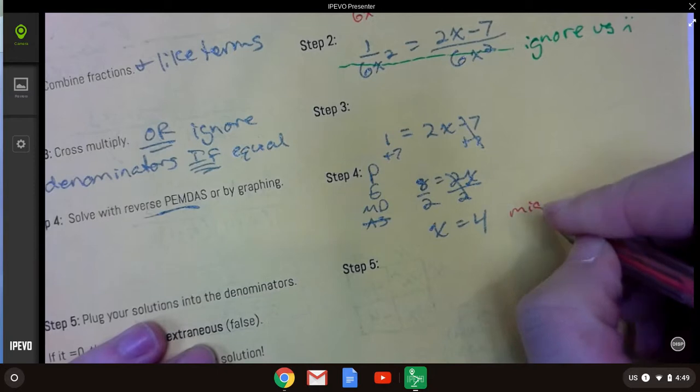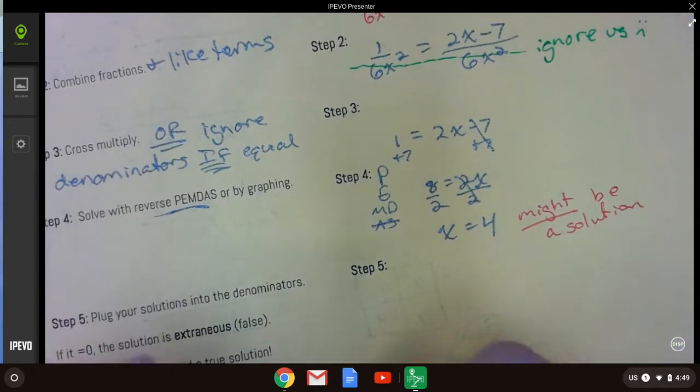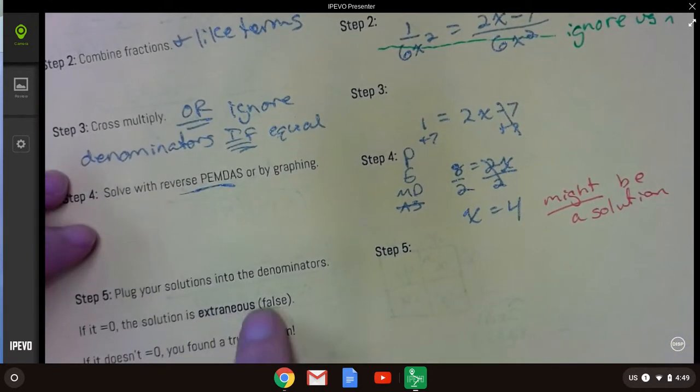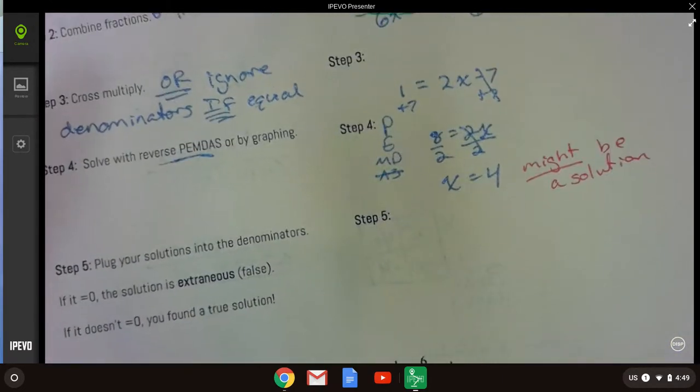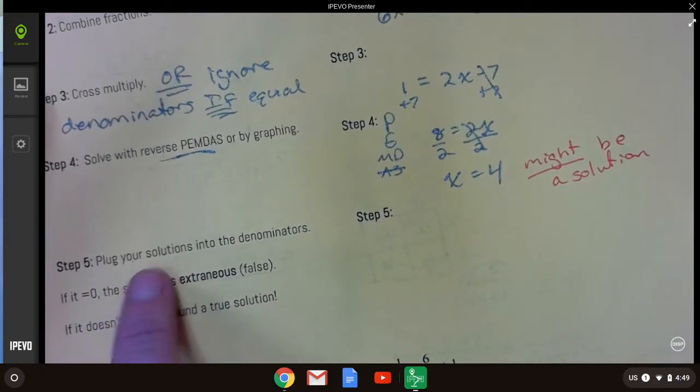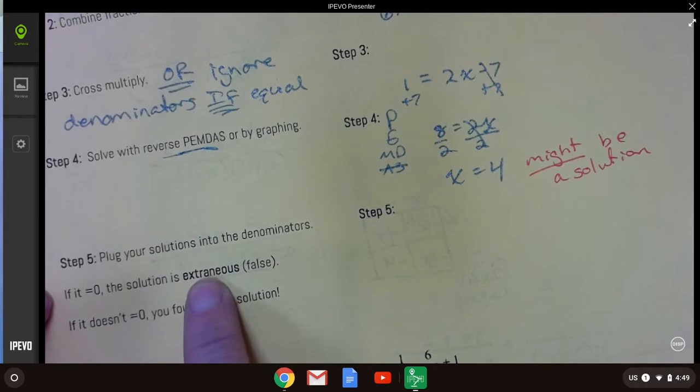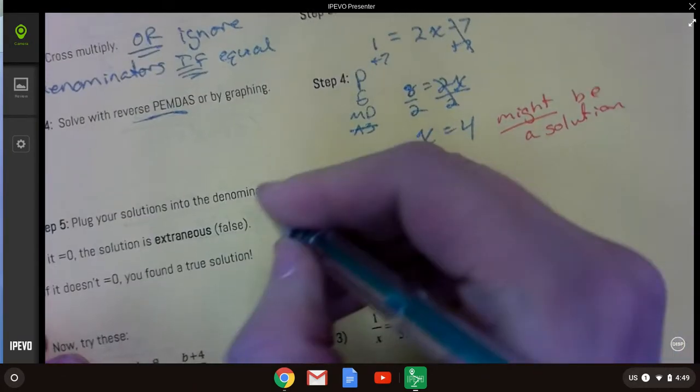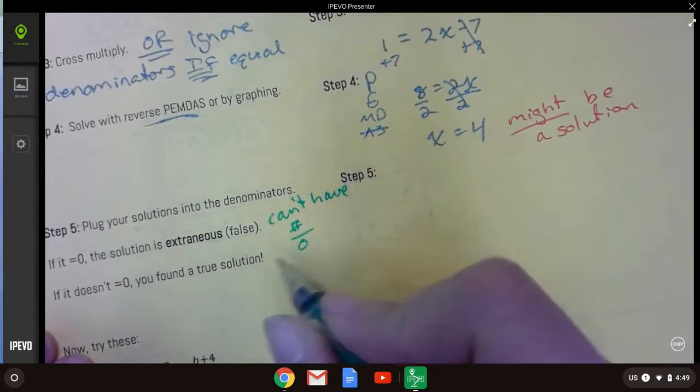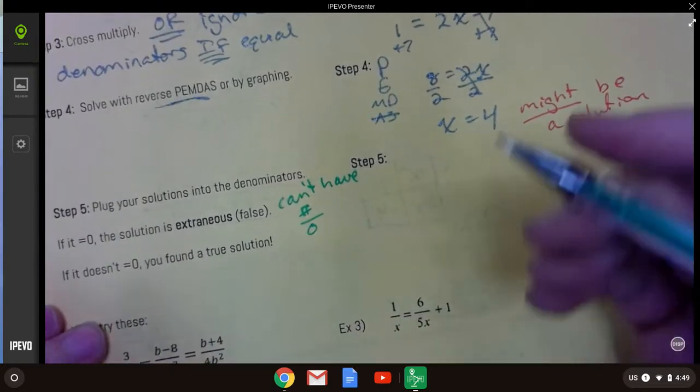Now, this might be a solution. The thing with rationals is that you're going to have to check it. Every time, you're just going to have to make sure that it's still going to work because there's something called an extraneous solution, like a false solution, which you might come up with depending on how you solve it. So, this might be a solution. To check, you're going to plug the solutions into your denominators. If you get 0, the solution is extraneous. Remember, we can't have 0. We can't have a number over 0. So, that's why we check the denominator. But, as long as it doesn't equal 0, then you found one.